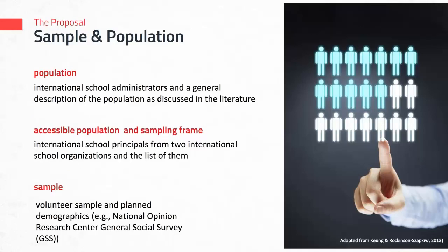Now that you have a better understanding of these terms, let's talk about what to include in your proposed research plan regarding population, accessible population, sampling frame, and sample. In your proposed research plan, you want to describe the population — including but not limited to sex makeup, age, ethnicity, and other unique characteristics. You then want to talk about your accessible population and sampling frame in relation to the population, and list the demographic information you'll collect from your sample so that in your final report you can discuss, for example, percentages of males versus females, ethnic makeup, and whether this reflects what is known about the population.